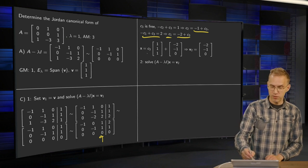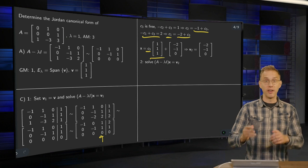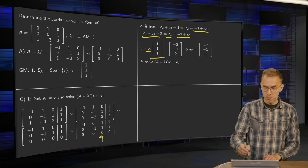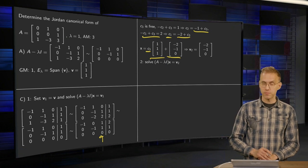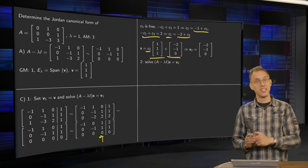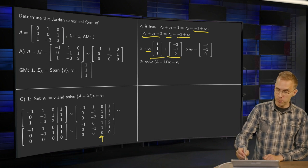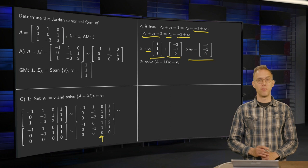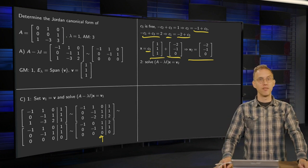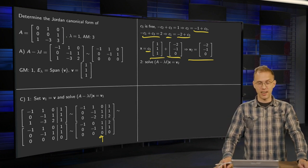And we write down the parametric vector form. X equals C3 times the eigenvector as expected, plus some particular solution, minus 2, minus 1, 0. And then for the second generalized eigenvector, we can take the particular solution. V2 equals minus 2, minus 1, 0. So there we have our second generalized eigenvector.